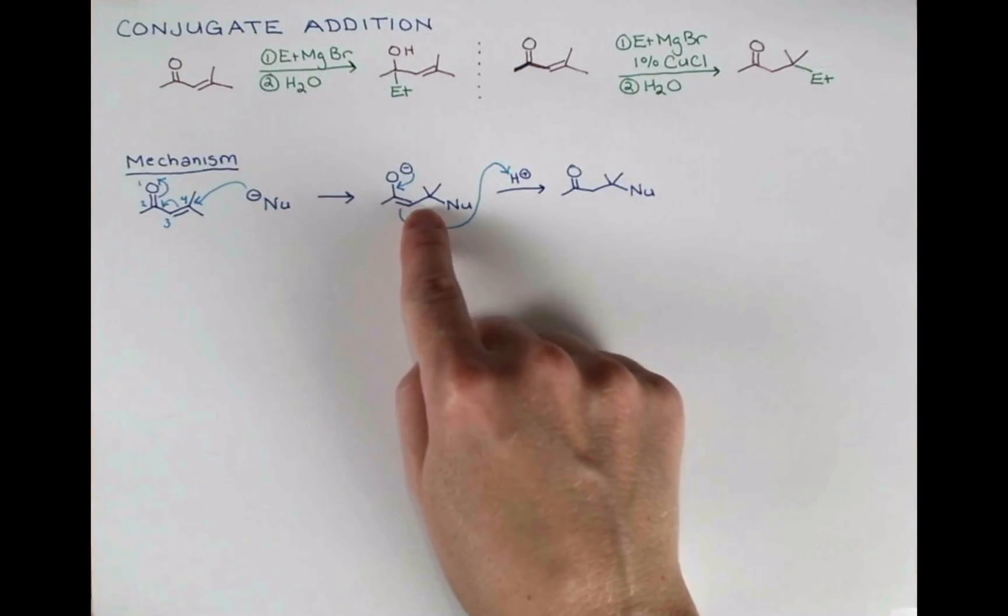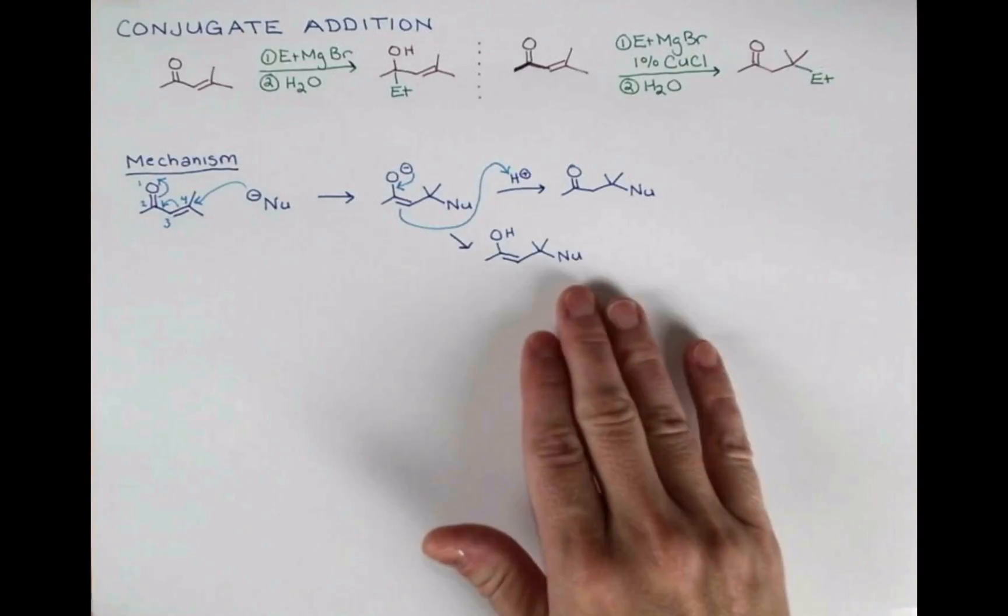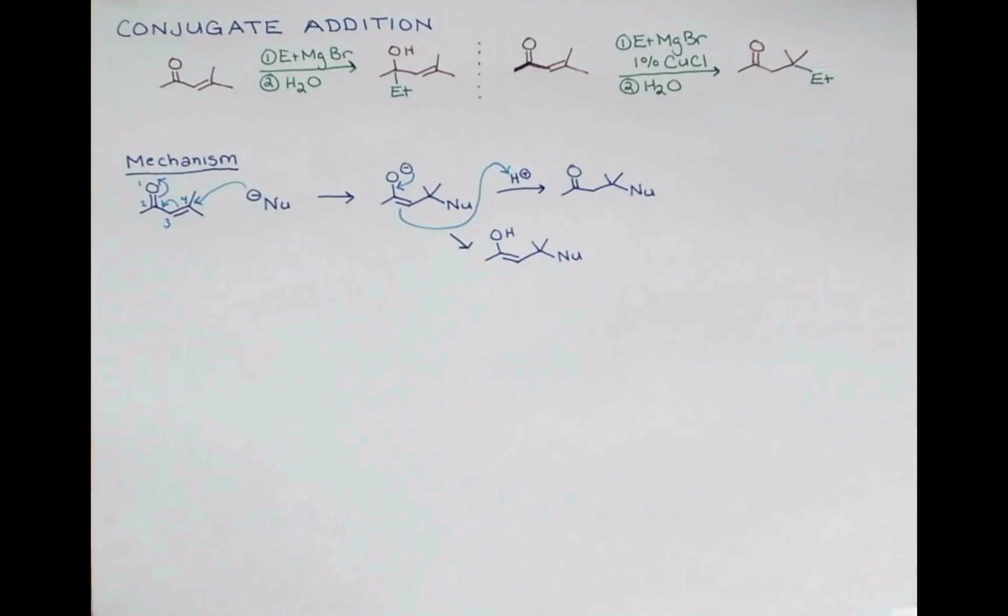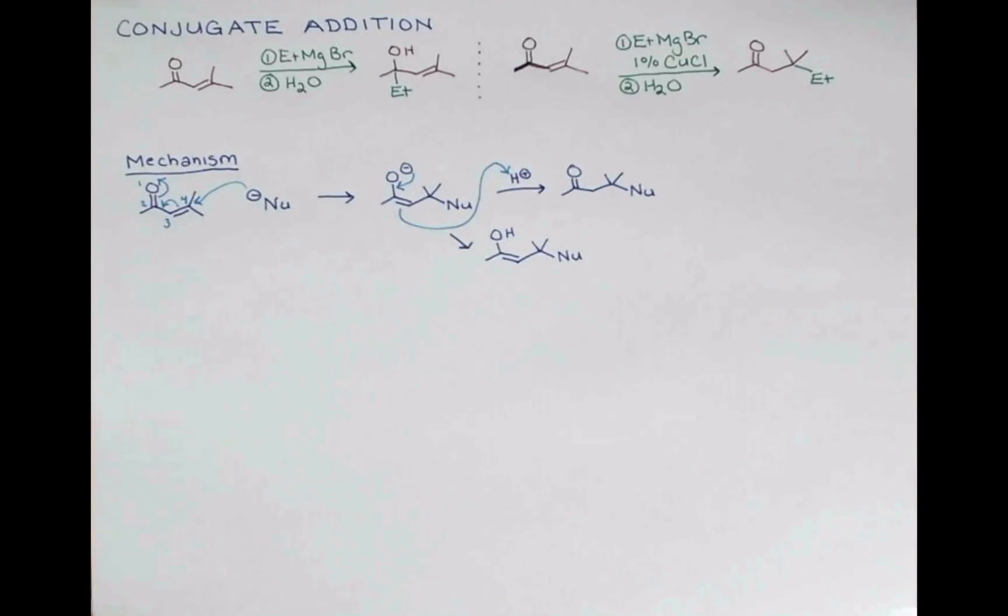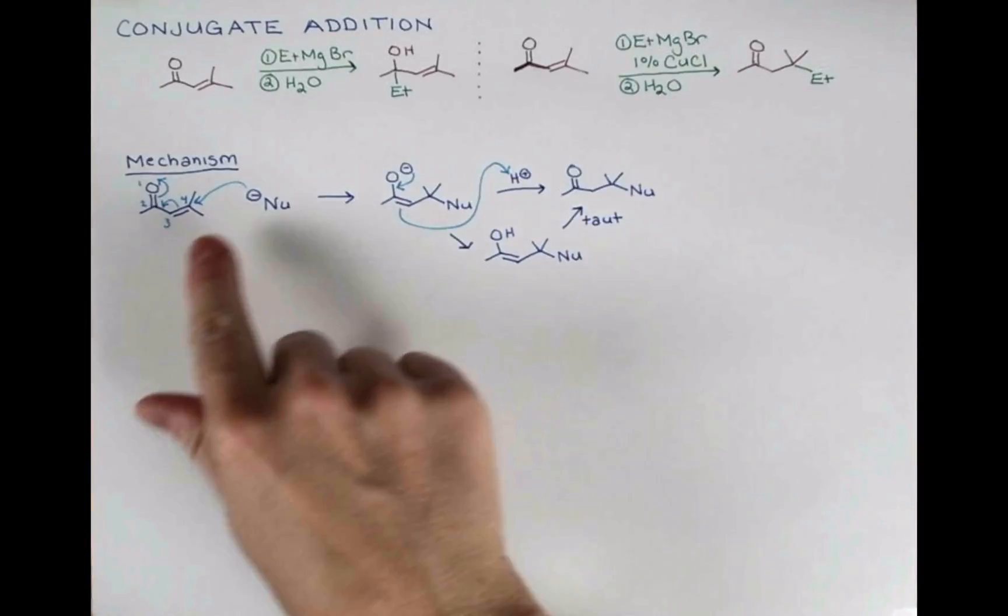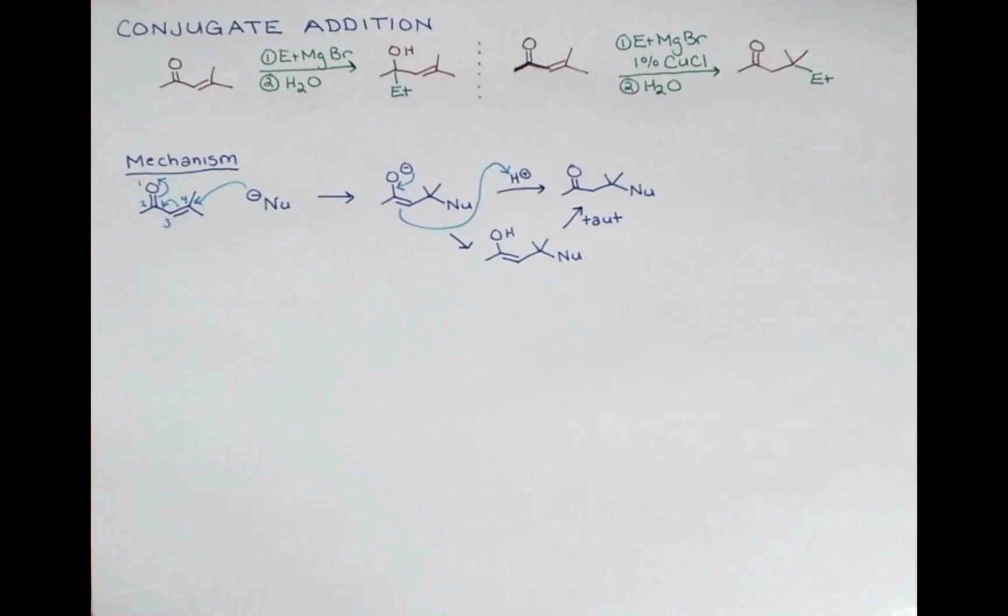If the enolate protonates on oxygen, we get an enol. But that's no problem because this compound will readily tautomerize to the ketone, giving us the same product. So each of these routes is a fine way to draw the mechanism.